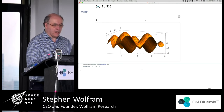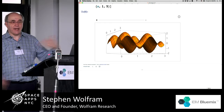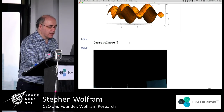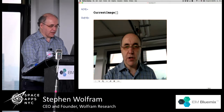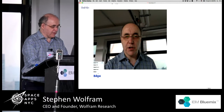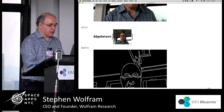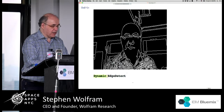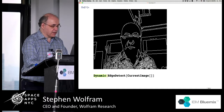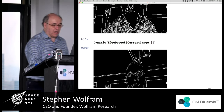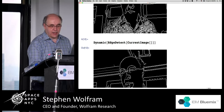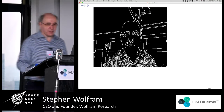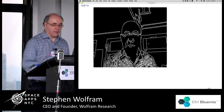The idea of Wolfram Language is to be able to deal with any kind of data. A typical thing we might do is pick up an image — let's get the current image. There's the current image. Now we can take that image and start doing image processing. Let's edge detect that image — there are the results of edge detecting it. We could dynamically edge detect the current image in real time. We can do all sorts of image processing, and we'll probably do a bunch of that with interesting astronomical data a little while. But I just want to run through a few basic things we can do here.